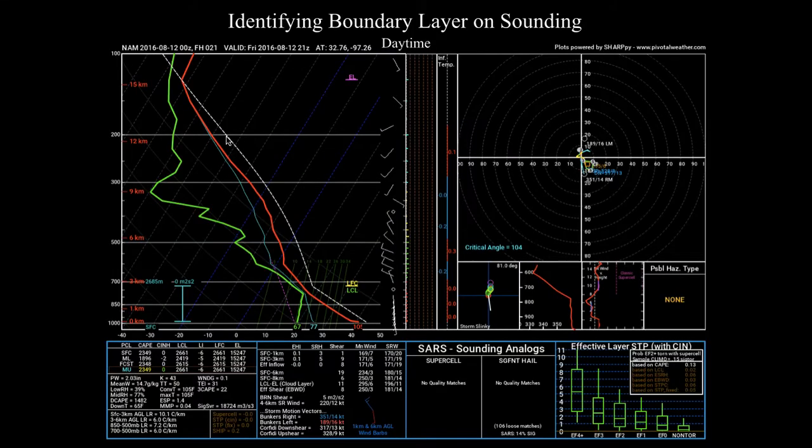So let's actually go ahead and take a look at some soundings that sort of illustrate this. If we take a look at, let's first take a look at what the boundary layer would look like in the peak of the afternoon where the heating is really strong. And this sounding might actually look familiar. In fact, this was the sounding that I used to sort of illustrate an environment that's favorable for microbursts.